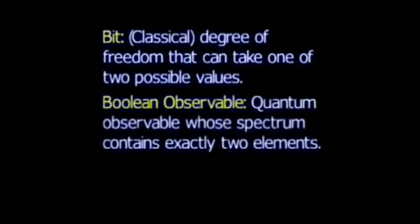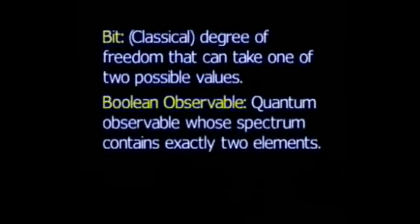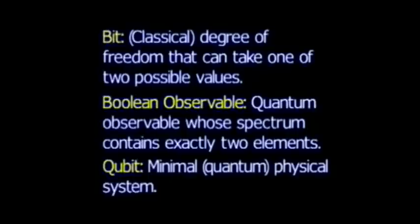Bear in mind the difference between a qubit, a Boolean observable, and a bit. A bit is a degree of freedom that can take one of two possible values. A Boolean observable is the quantum generalization of that. In any one universe it resembles a bit, but it can take two different values simultaneously in different universes. A qubit is a physical system, a minimal physical system that contains Boolean observables, and I'll describe several such systems in future lectures.